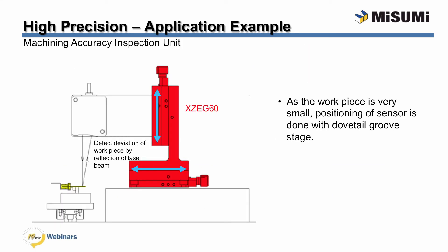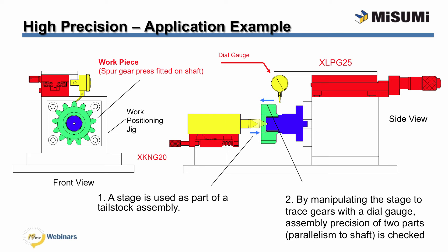This is an example of high precision stages. In this example, a machining accuracy inspection unit is utilizing the XZEG-60 stage. This system utilizes an x and z-axis to position a laser beam to detect deviation of a workpiece by the reflection of the beam. Utilization of stages in this design allows for the elimination of costly CMM measuring tools. Design time and cost were reduced, allowing for the inspection of parts during the production process, resulting in a positive improvement of the yield ratio.